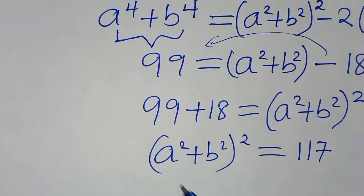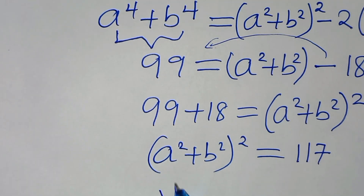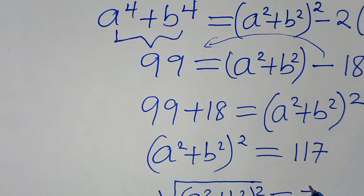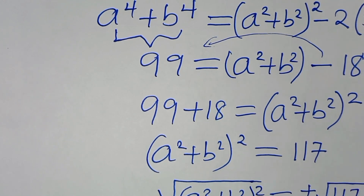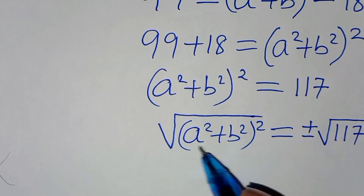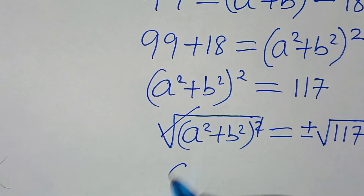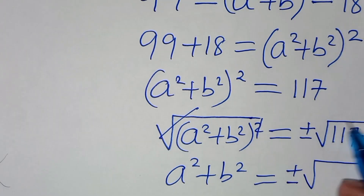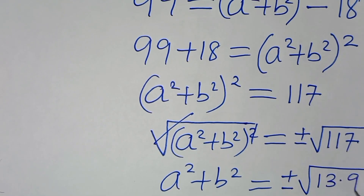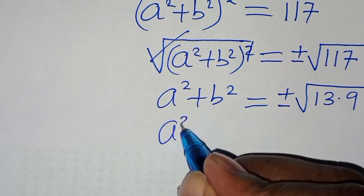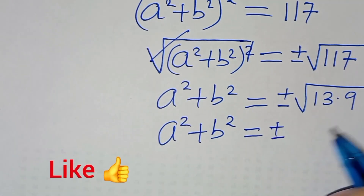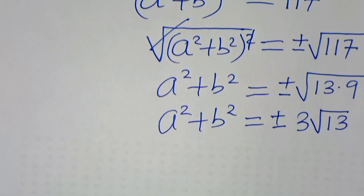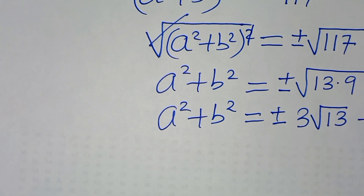So (a² + b²)² = 117. To solve for a² + b², we apply the square root to both sides: a² + b² = ±√117. Since 117 = 9 × 13, this simplifies to a² + b² = ±3√13. We'll label this equation 3.